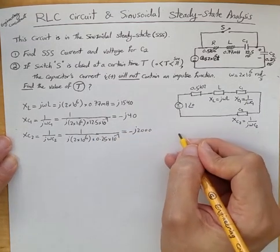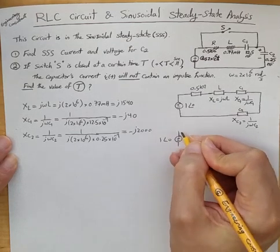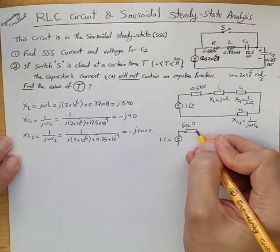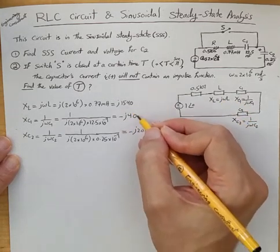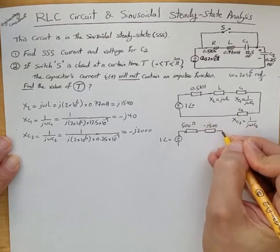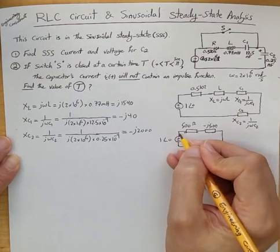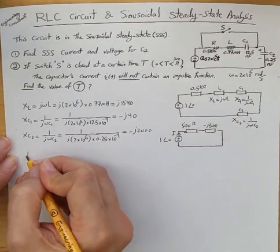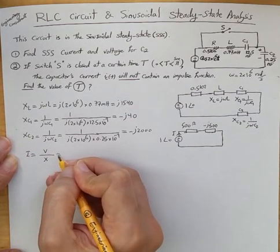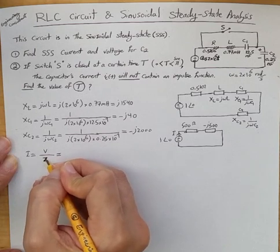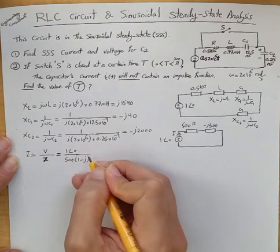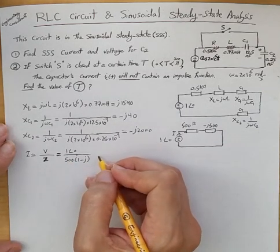So the circuit simplifies in steady state: we have a 500 ohm resistor, and then the equivalent series combination of the three impedances — j1540, −j40, and −j2000 — which sums to −j500. So the simplified circuit has 500 ohms and −j500 ohms in series. The current through this circuit is easy to compute: I = V / Z_total = 1∠0° / (500 − j500), in amps.